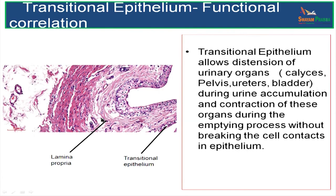Now we will go into the functional correlation of transitional epithelium. Why do you have transitional epithelium in calices, pelvis, ureters, and bladder?